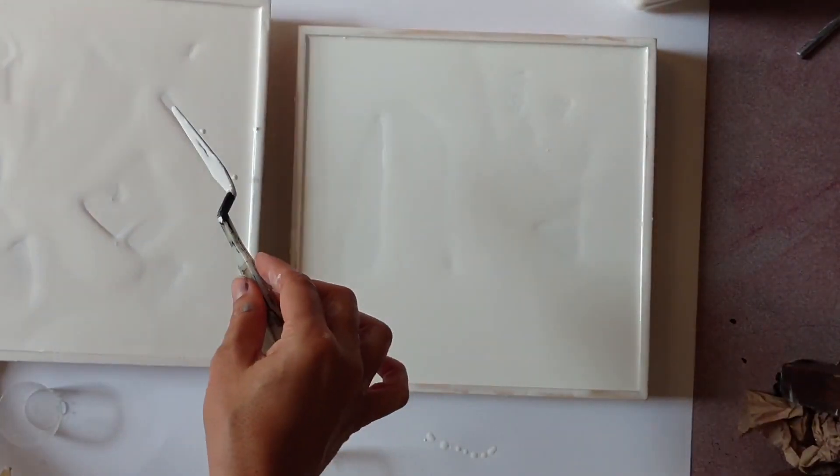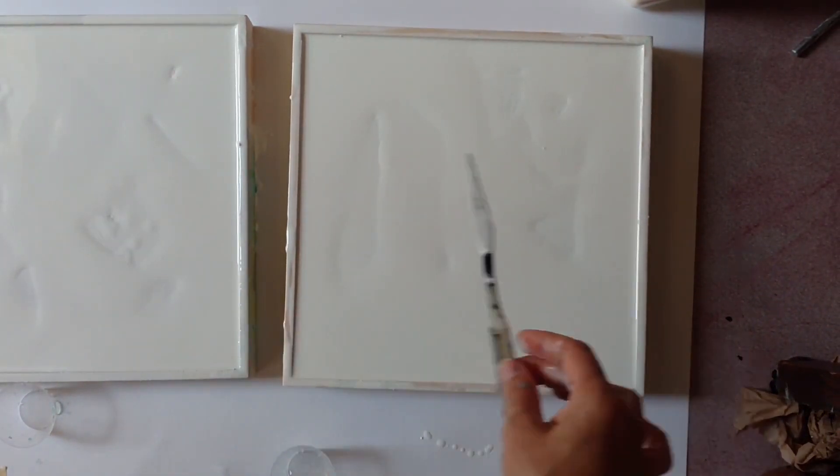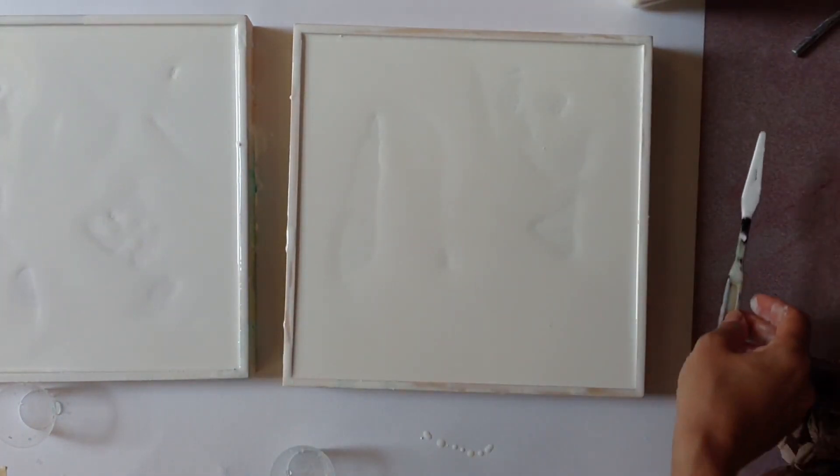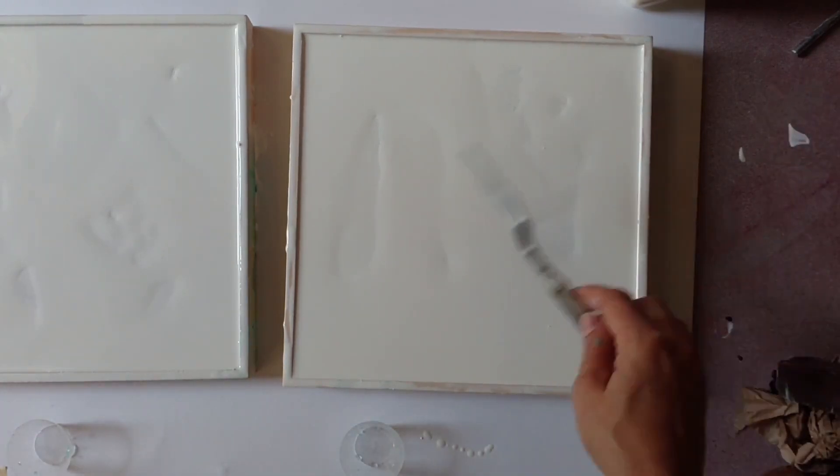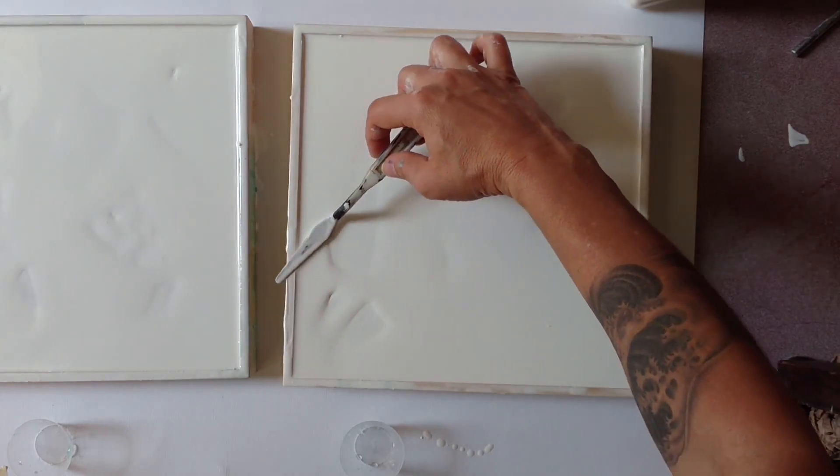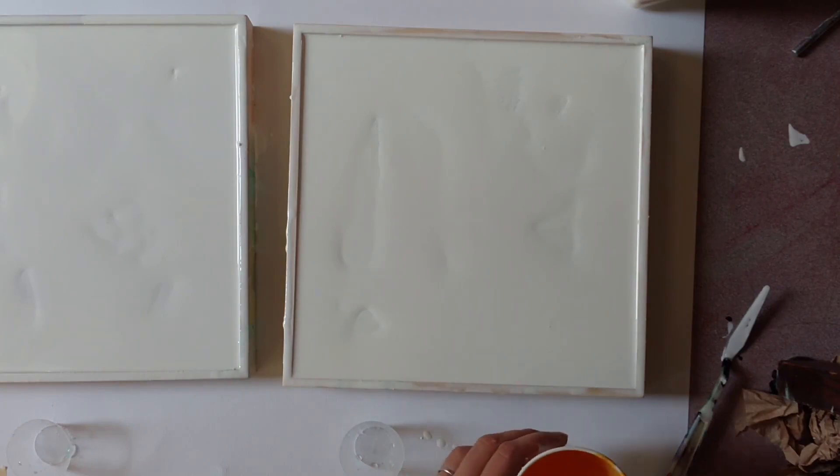All right. Two paintings at a time. See how that goes. I think that's the first time I've done that. Trying to paint two at a time. Could be a disaster. We'll see. Going with this same peacock color scheme that I did before.